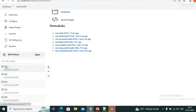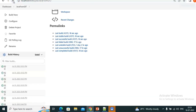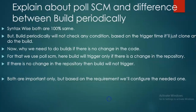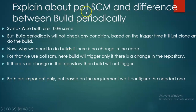Applied. This got executed because by that time we had already changed the code. Now let's see if 218 will trigger or not. Both options are important. The question is: Poll SCM has many advantages compared to Build Periodically — then why does Build Periodically exist? Even it has some advantages.